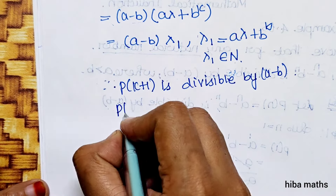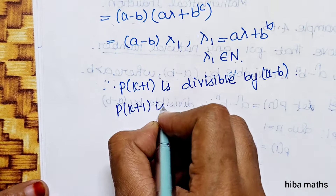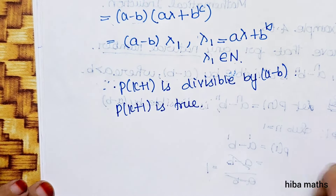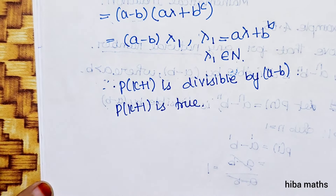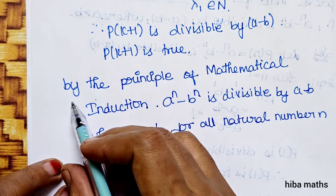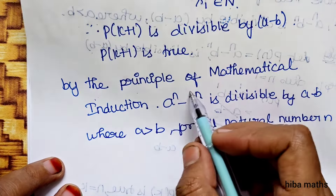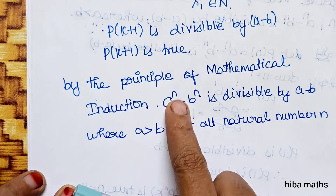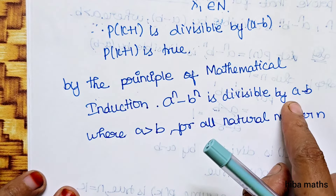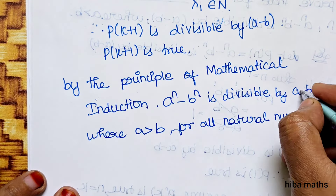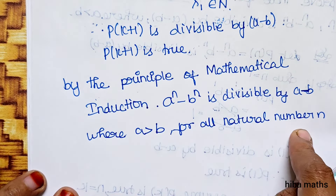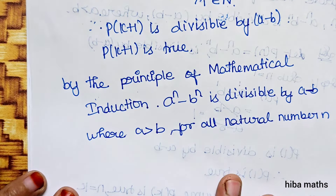Therefore P(k+1) is divisible by (a minus b), so P(k+1) is true. By the principle of mathematical induction, a power n minus b power n is divisible by (a minus b), where a is greater than b, for all natural numbers n.